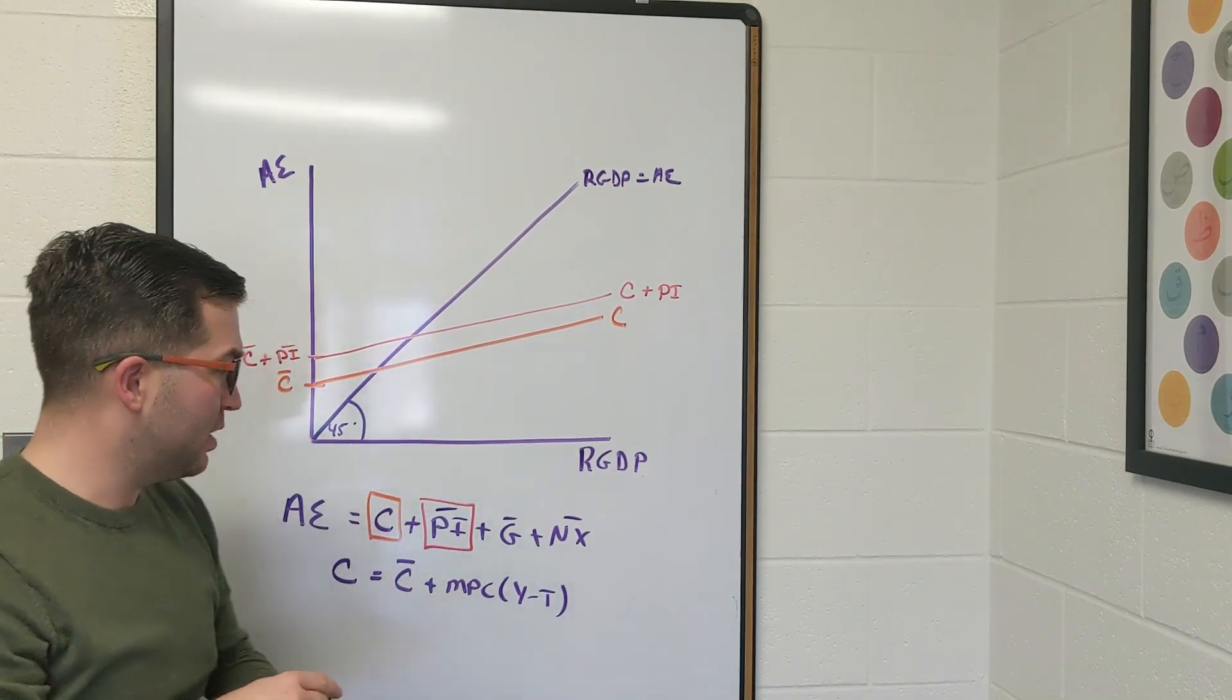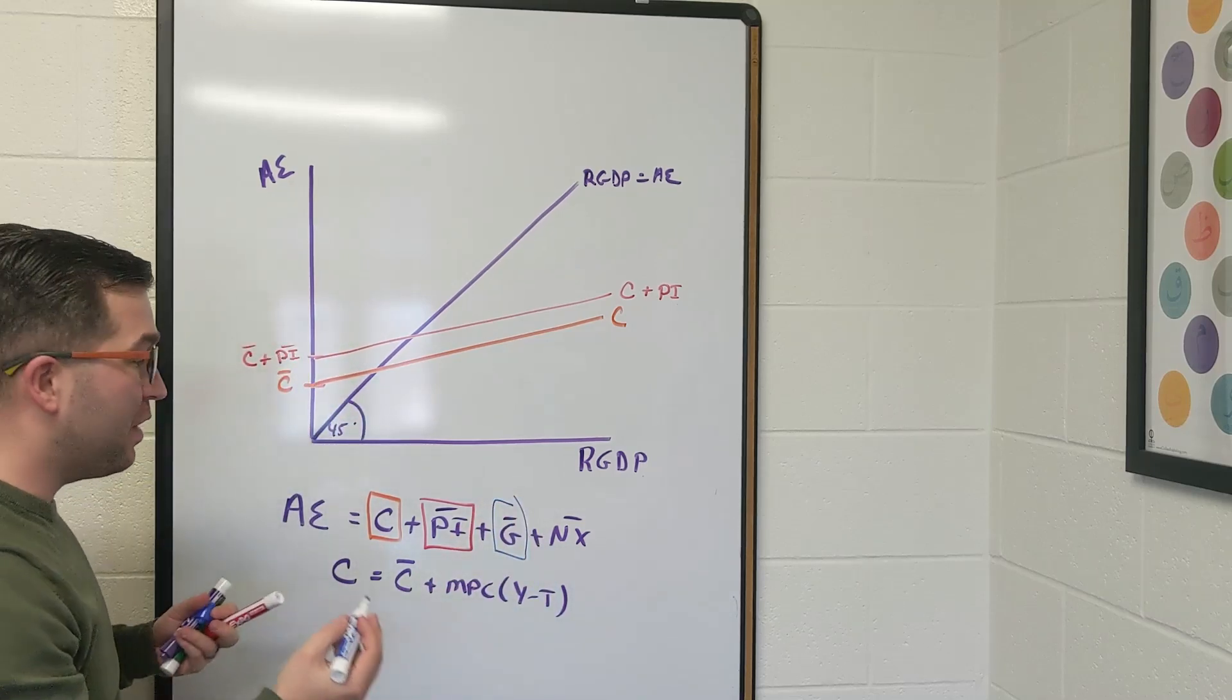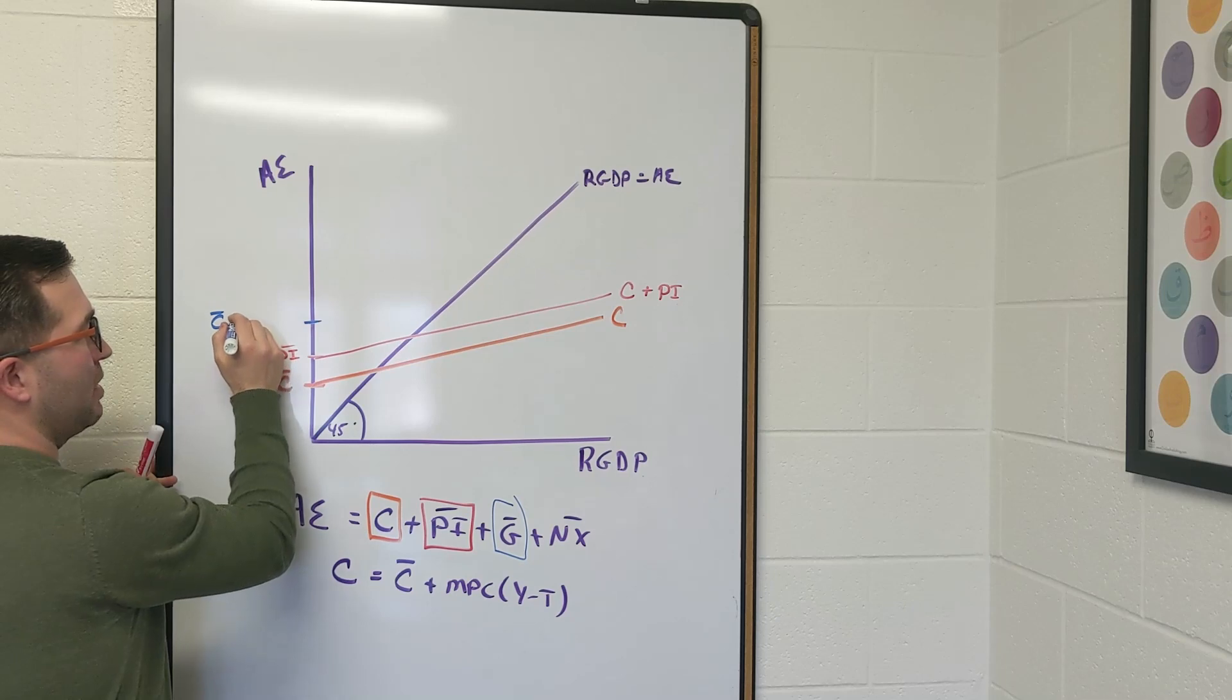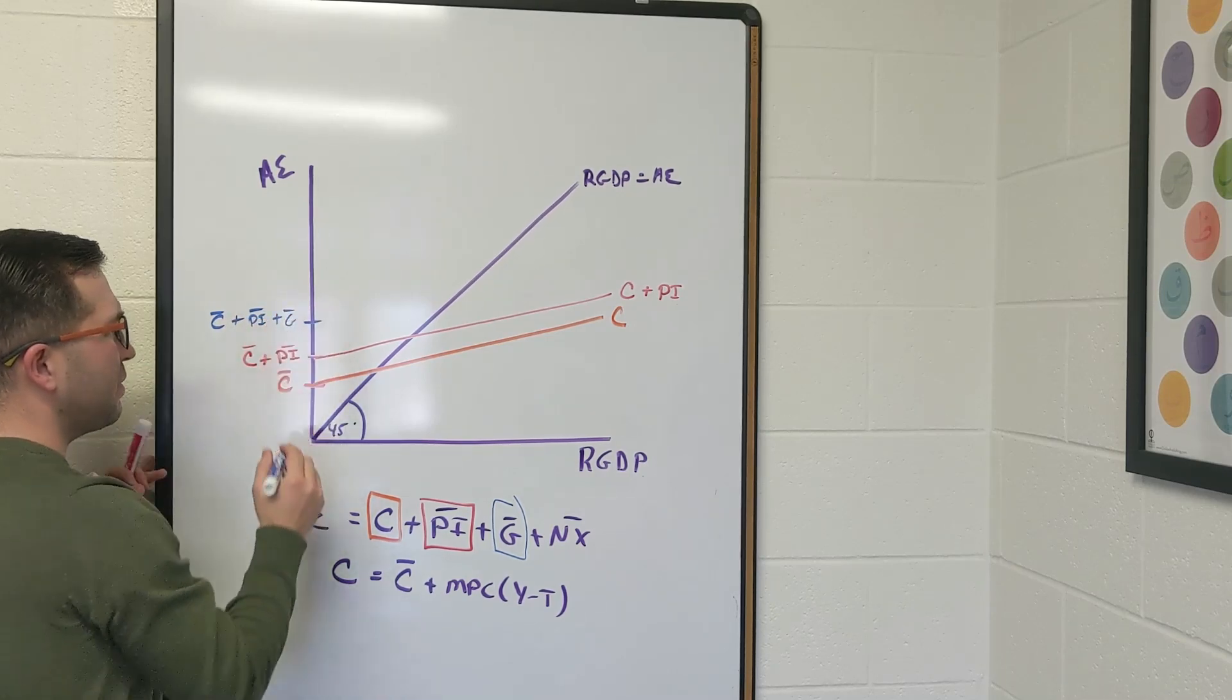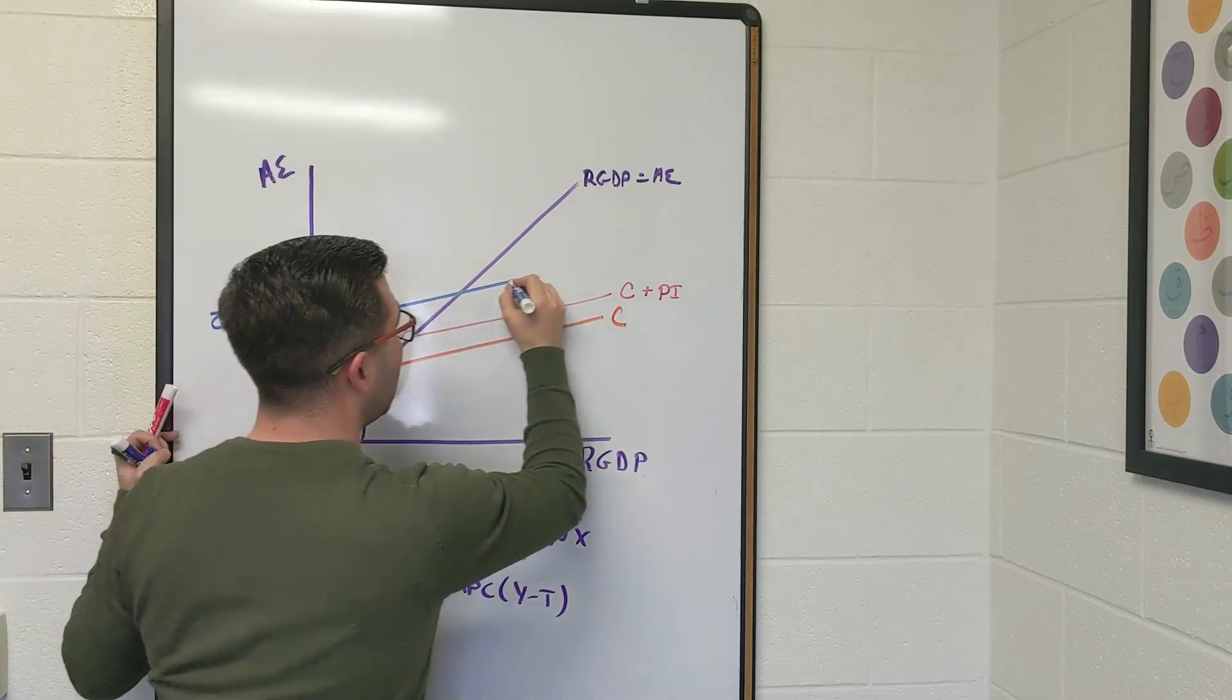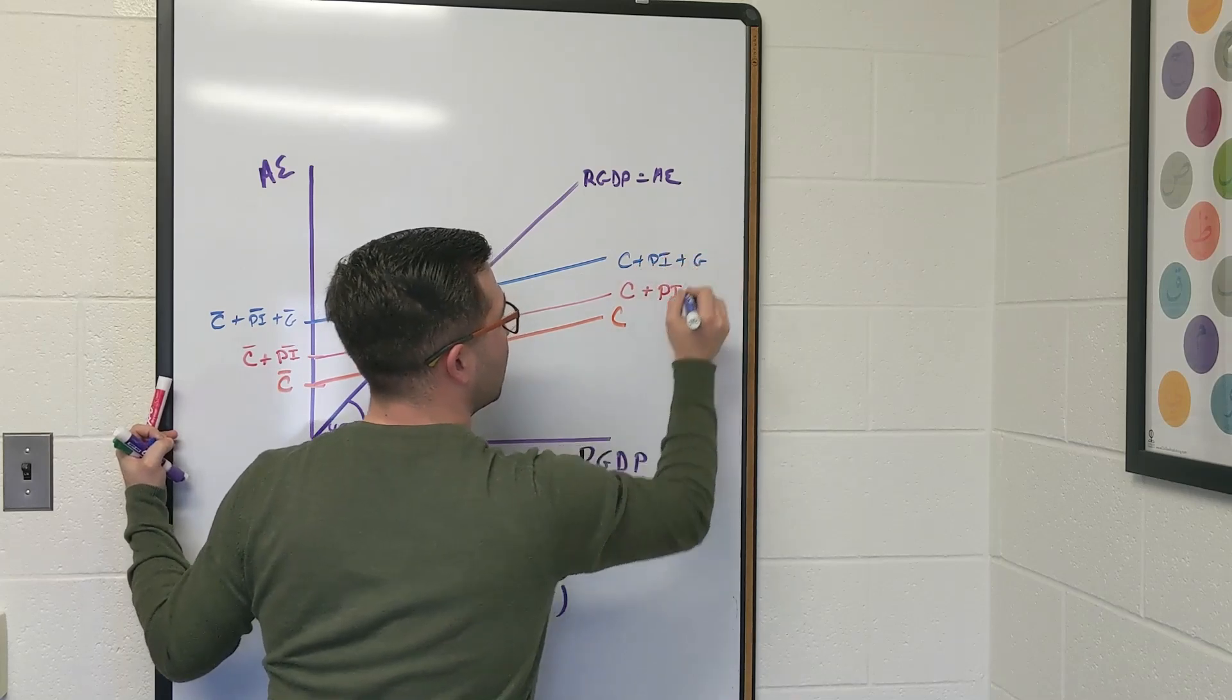Hopefully you can kind of see where this is going. Next, we care about government purchases. Well, the same exact thing. We have some level here that's going to have autonomous consumption, autonomous planned investment, and autonomous government purchases. Again, a parallel line: C plus PI plus G.